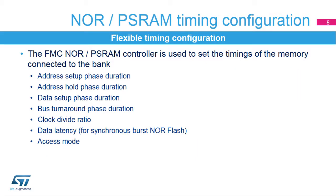The NOR PSRAM controller allows the configuration of various timing parameters for the supported memories, including the number of AHB clock cycles, or HCLK, within one memory clock cycle, or CLK, and data latency — the number of clock cycles to be issued to the memory before the first data transfer access mode.